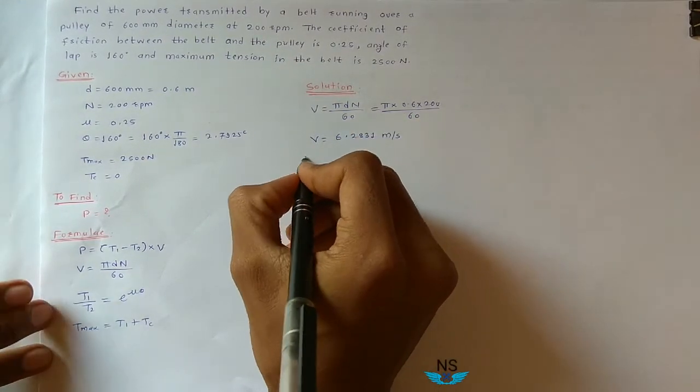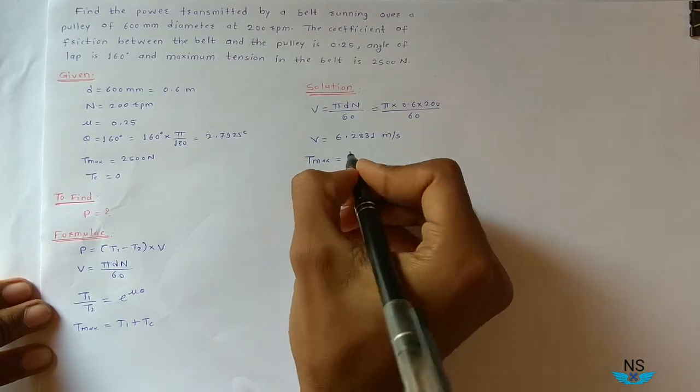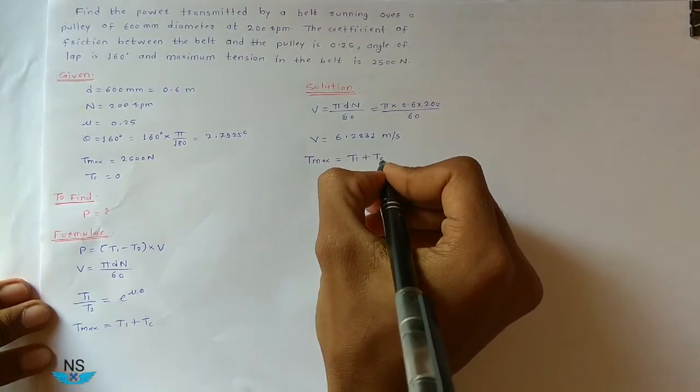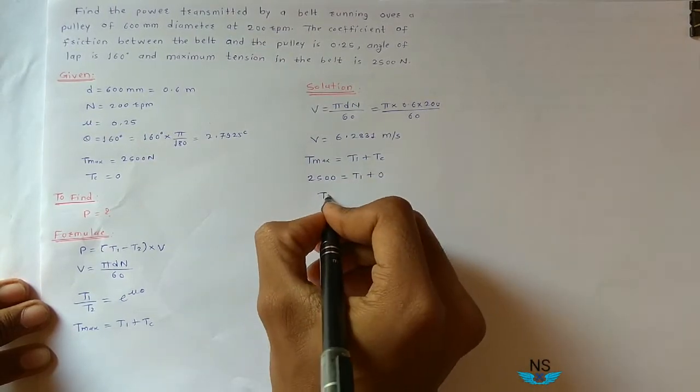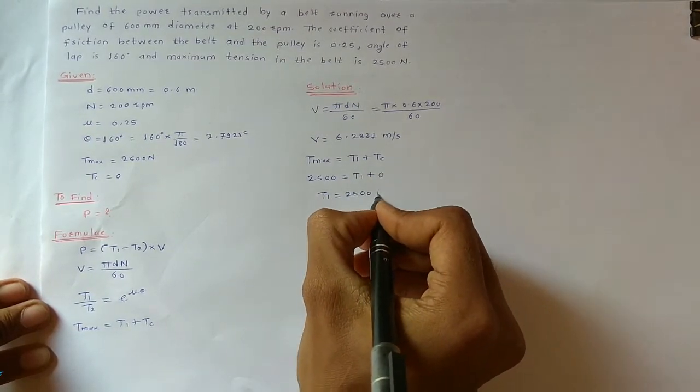Now T1 and T2. From Tmax we get T1. So Tmax is equal to T1 plus Tc. Tmax is 2500 equals T1 plus Tc which is 0. So T1 is equal to 2500 Newton.